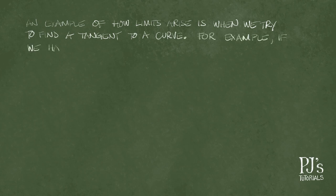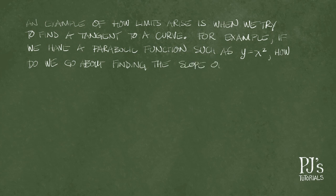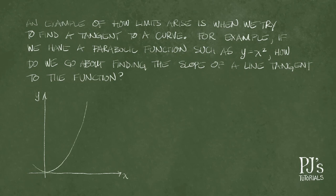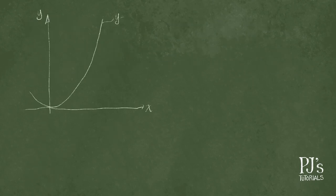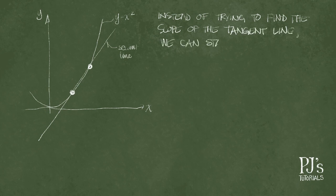For example, if we have a parabolic function such as y equals x squared, how do we go about finding the slope of a line tangent to the curve like in the image below?